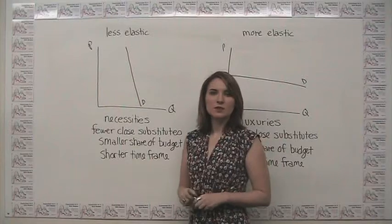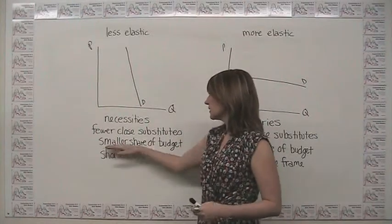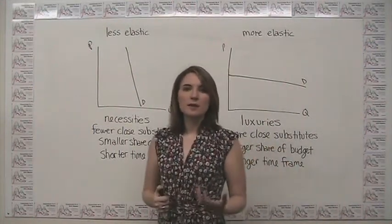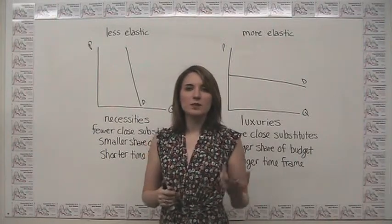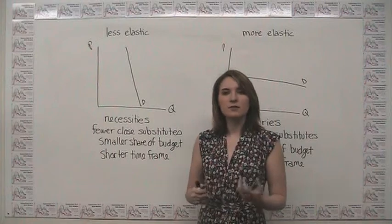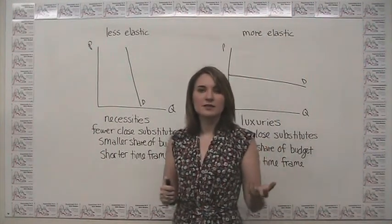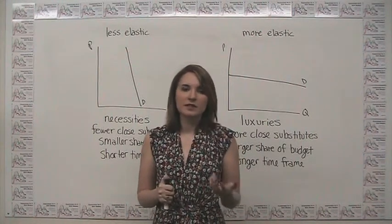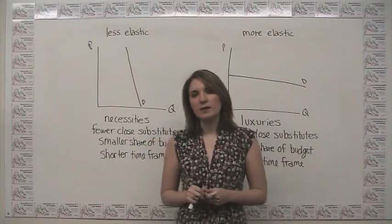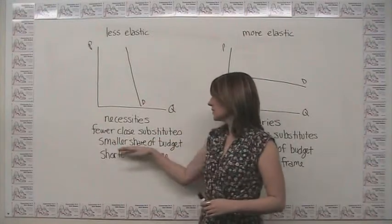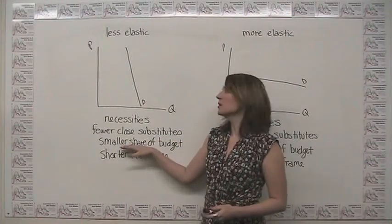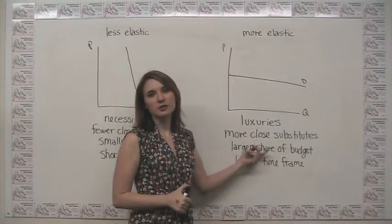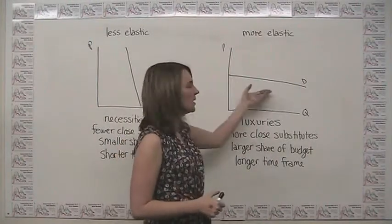The third rule is that consumers tend to be more inelastic when something consists of a very small share of their budget. That doesn't necessarily mean a low price, but in the grand scheme of things, you don't consume enough of it for it to really matter. Say you have $3,000 of income per month — if the price of something you spend $1 a month on doubles or triples, it's not really going to affect your consumption behavior. When something comprises a smaller share of your budget, you act more inelastically; a larger share makes you more price-conscious and produces higher elasticity.